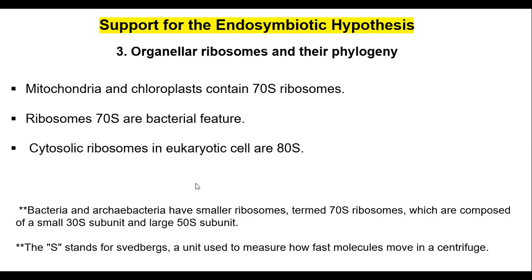The third reason is that mitochondria and chloroplasts have ribosomes with a sedimentation constant of 70S — the smaller, prokaryotic ribosomes. The sedimentation constant refers to how fast molecules move in a centrifuge. Bacteria have 70S ribosomes while eukaryotic ribosomes in the cytosol are 80S. But mitochondria and chloroplasts have their own 70S ribosomes — essentially bacterial ribosomes — present alongside the 80S ribosomes of the eukaryotic cytosol.